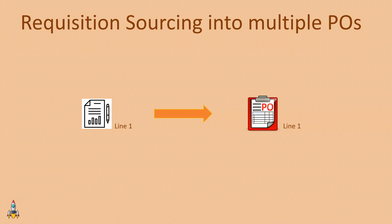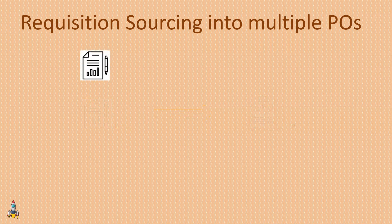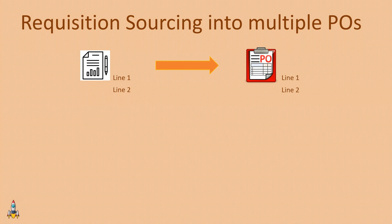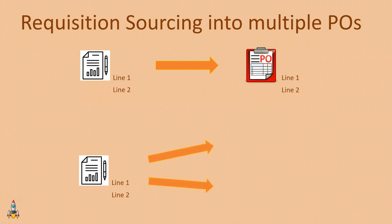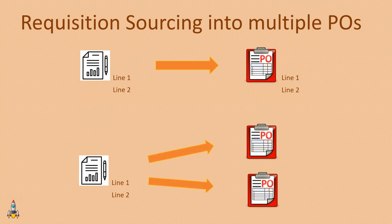Now let me put the question for you. Suppose we have a requisition with two lines on it. When we run the sourcing process, how many purchase orders would we get? Would we get just one purchase order with these two lines, or would the requisition with two lines get sourced into two different purchase orders where each purchase order has its own line? That means the lines of the requisition getting split across multiple POs.